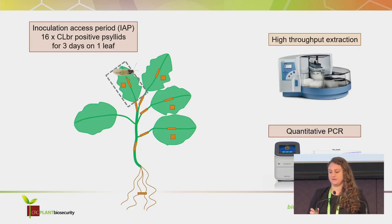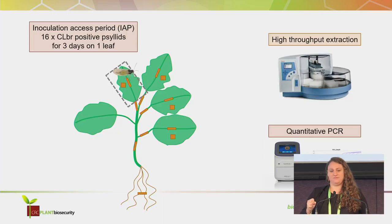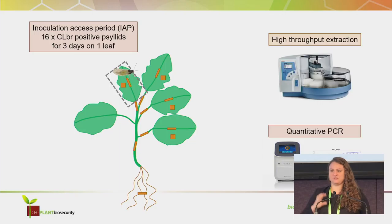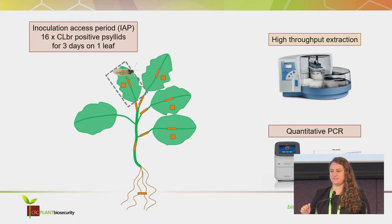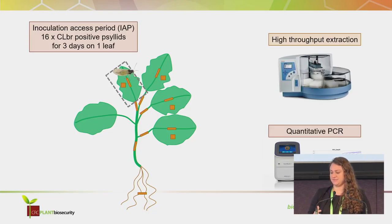As a first look to answer these questions, I restricted 16 psyllids to one leaf on the plants and let them feed for three days, then removed and killed them. I then destructively sampled the plants at several time points, taking 14 samples ranging from the root and stem through to the mid-rib, leaf petiole of the top, middle, and bottom leaves, as well as the inoculation leaf. This was done in six replicates and I validated a high-throughput extraction method and performed quantitative PCR.